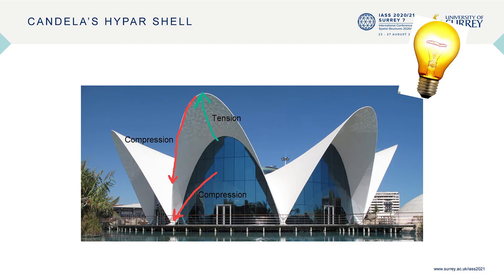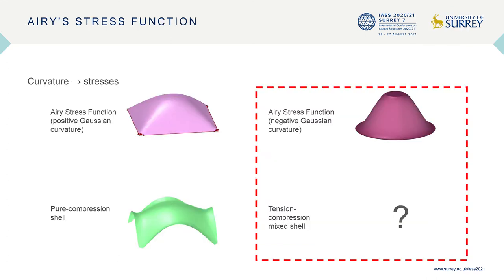it will likely enable us to expand the possible forms that the membrane shells can take. We used Airy's stress function as our primary tool. The basic idea of this stress function is that its curvature is interpreted as the stress in the shell, so we can select the pure compression stress state by selecting a stress function with a positive Gaussian curvature, and the tension-compression mixed stress state by selecting a stress function with a negative Gaussian curvature.